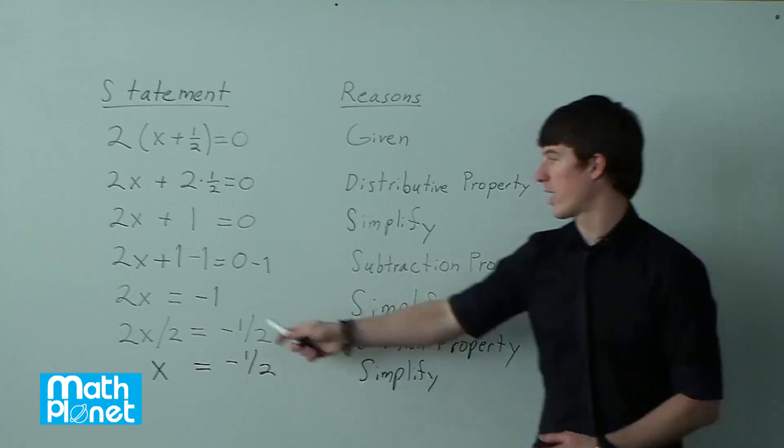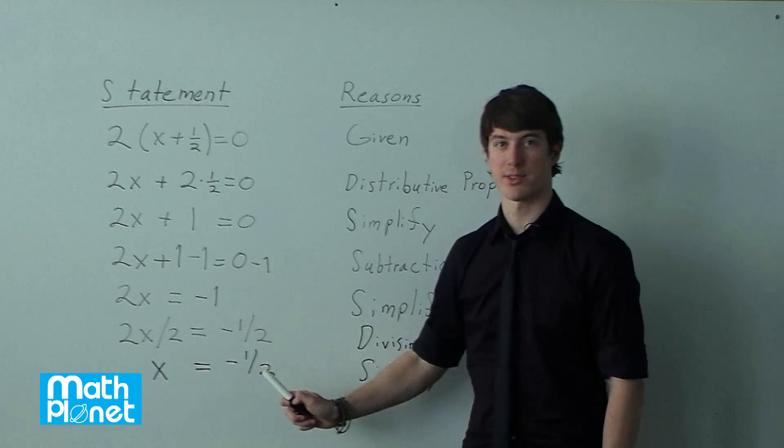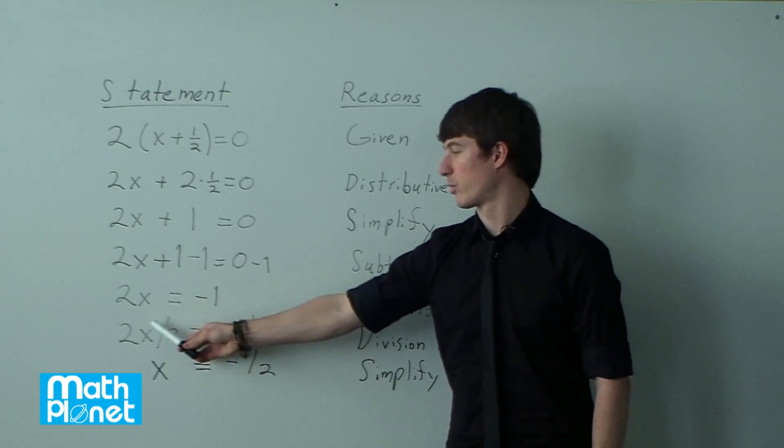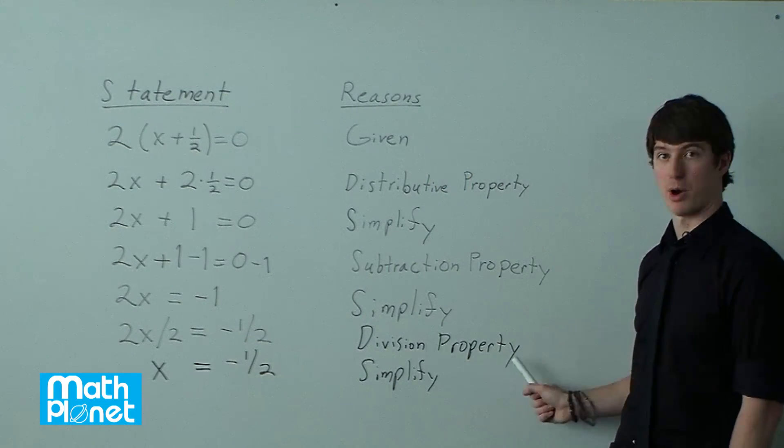So we need to do the next step. We have an x here, 2 times x. The inverse operation of multiplication is division. So we're going to use the division property.